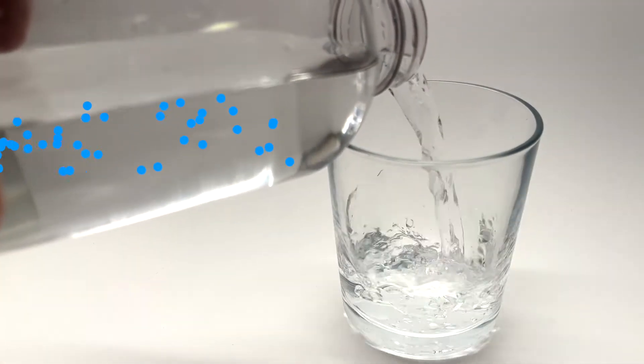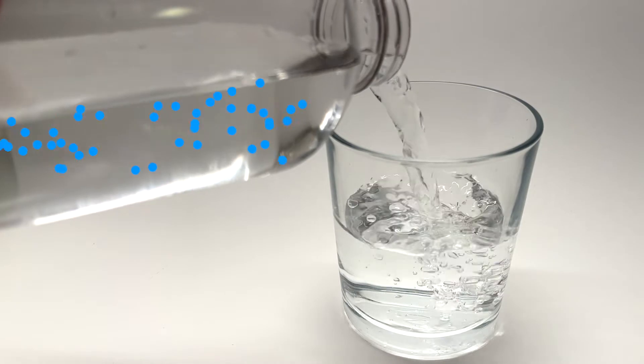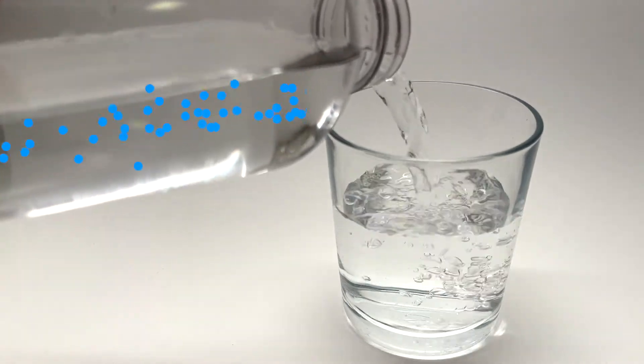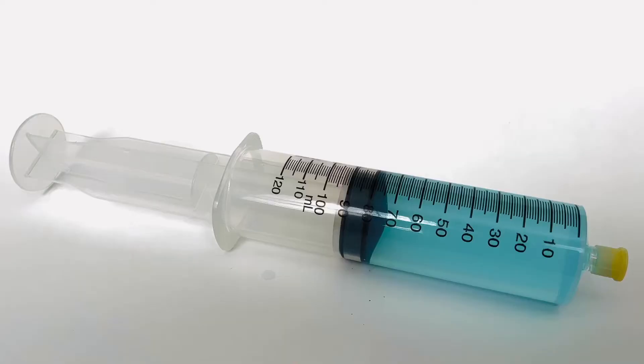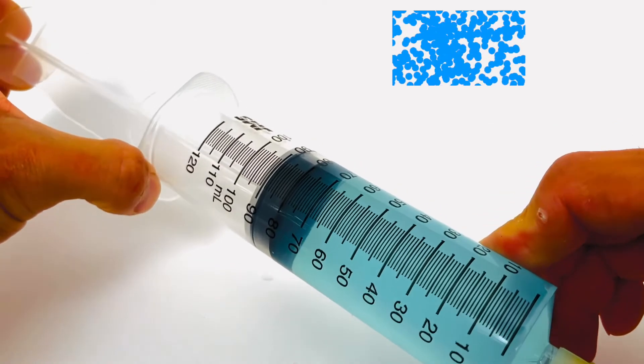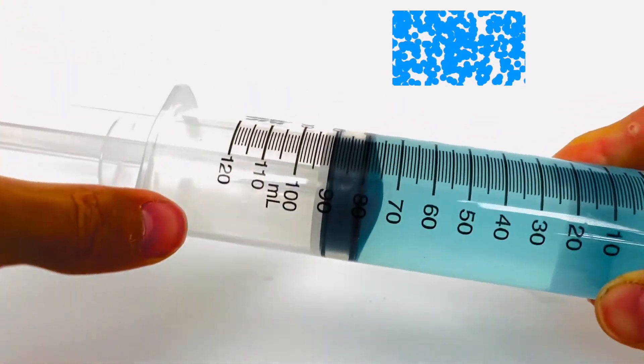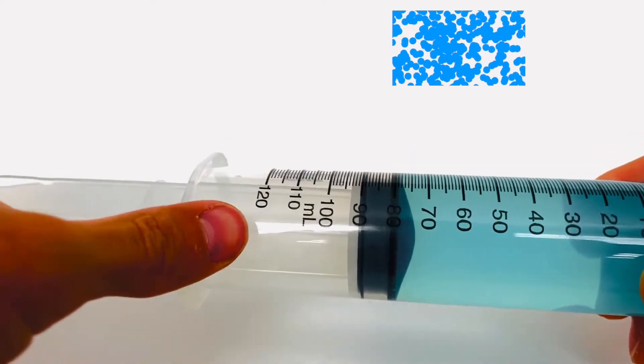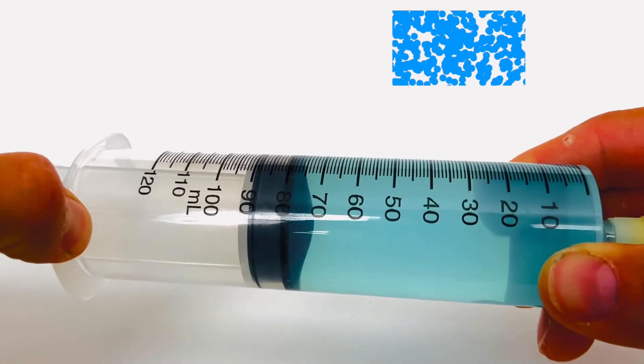This ability of the particles to move around allows fluids to flow and also change their shape. Even though the particles are free to move around, the attraction of the particles keeps them close together, which makes them difficult to compress similar to a solid. Here is a syringe filled with a liquid and no matter how hard you try to press on it, its volume still remains constant.